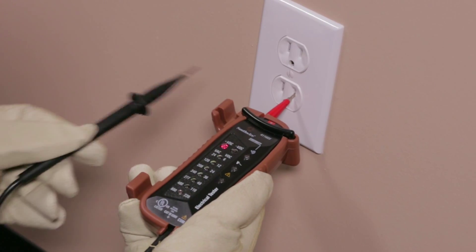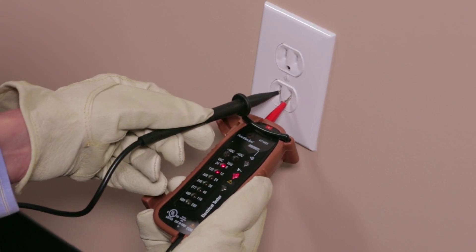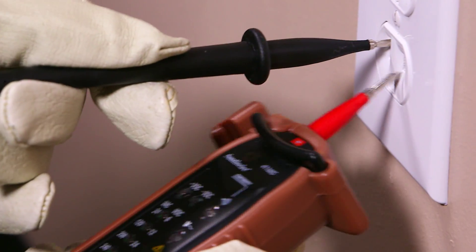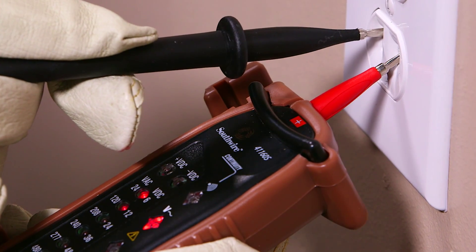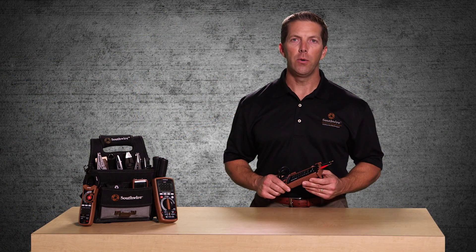Simply touch the test leads to the circuit being tested and LEDs will glow to indicate the voltage level from 24 to 600 volts AC and 6 to 220 volts DC. The tester also checks continuity on wires,